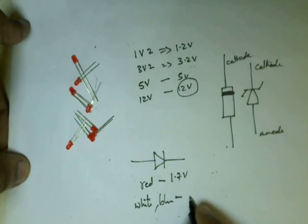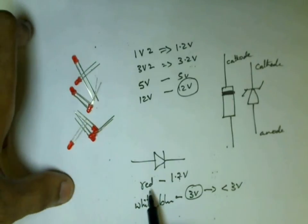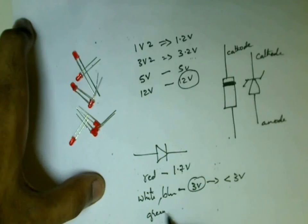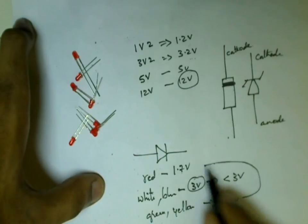Different color LEDs will have different forward voltage drops. That is, red LED will have around 1.7 volts, blue and white LEDs will have around 3 volts or less than 3 volts, green and yellow LEDs will have close to 2 volts, that is around 1.8 or 1.9 volts.